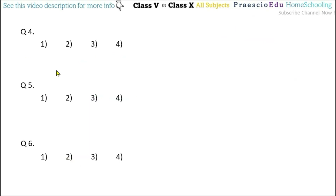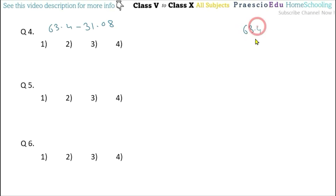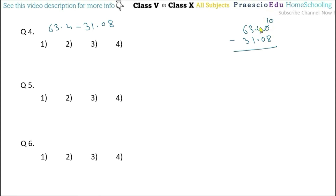Now question number 4: 63.4 subtracted with 31.08. We write 63.4 as 63.40. Now 0 minus 8 cannot be done, so borrow — 10 minus 8 is 2. Then 3 minus 0 is 3. Decimal point as it is. Then 3 minus 1 is 2, and 6 minus 3 is 3. So the answer is 32.32, given in option number 4.